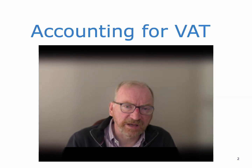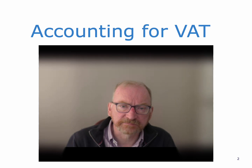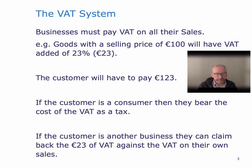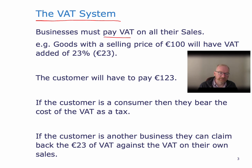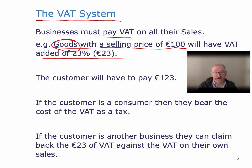This presentation is about accounting for VAT. So how does the VAT system work? Businesses have to pay VAT on all of their sales. Goods with a selling price of €100 will have VAT added of 23%. Now, that's not quite true — there are certain goods and services that are at different rates of VAT, and certain goods and services that are exempt from VAT. We won't be dealing with those kinds of goods in this section.